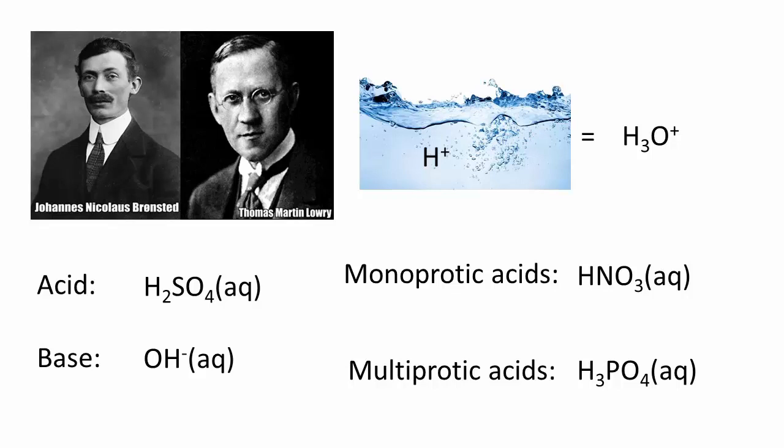As we shall see later in this course, nitric acid is a strong monoprotic acid, while phosphoric acid is a weak triprotic acid.